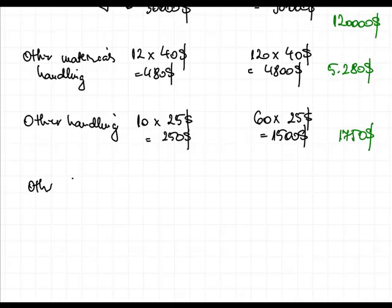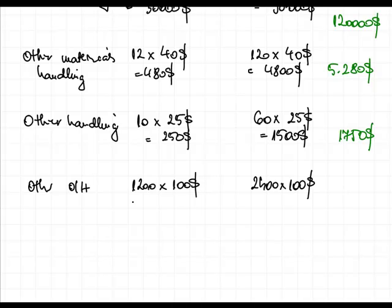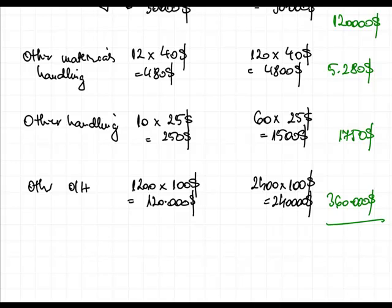The remaining other overhead that could not be allocated to any specific activities is divided between the two products based on labor hours worked — 1,200 hours for product A and 2,400 hours for product B — at $100 per hour. That gives $120,000 for product A and $240,000 for product B, a total of $360,000.